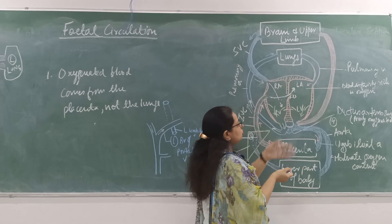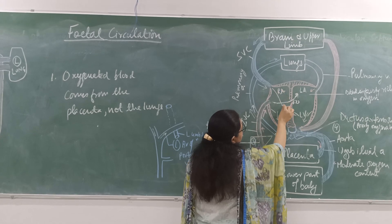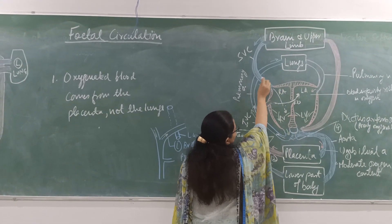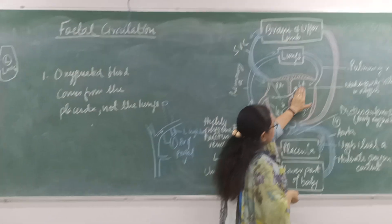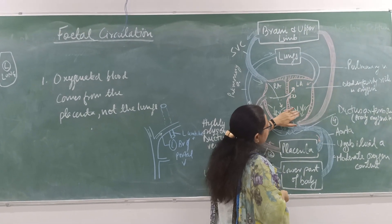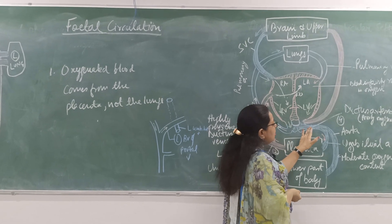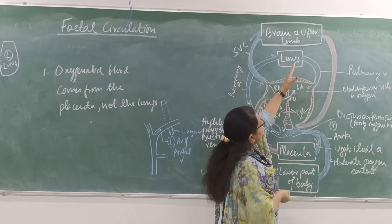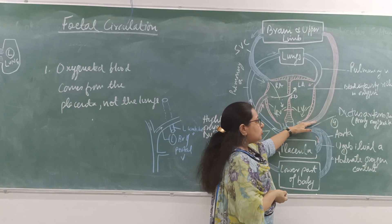This blood in the left atrium is fairly rich in oxygen. From the superior vena cava, blood enters the right ventricle, goes to the pulmonary artery, and then to the lungs. The fairly oxygenated blood in the left atrium enters the left ventricle and from the left ventricle goes to the aorta. In the aorta, the upper half of the body — that is, the brain and upper limbs — are supplied with highly oxygenated blood.